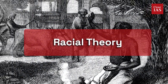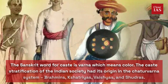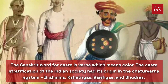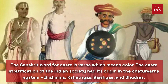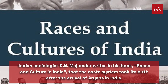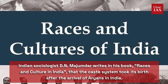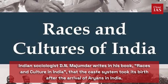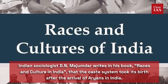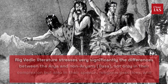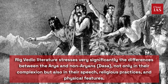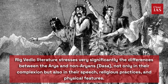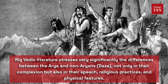Racial Theory: The Sanskrit word for caste is Varna, which means color. The caste stratification of Indian society had its origin in the Chatur Varna system — Brahmins, Kshatriyas, Vaishyas, and Shudras. Indian sociologist D.N. Majumdar writes in his book 'Races and Culture in India' that the caste system took its birth after the arrival of Aryans in India. Rig Vedic literature stresses very significantly the differences between the Arya and the non-Aryans — not only in their complexion but also in their speech, religious practices, and physical features.